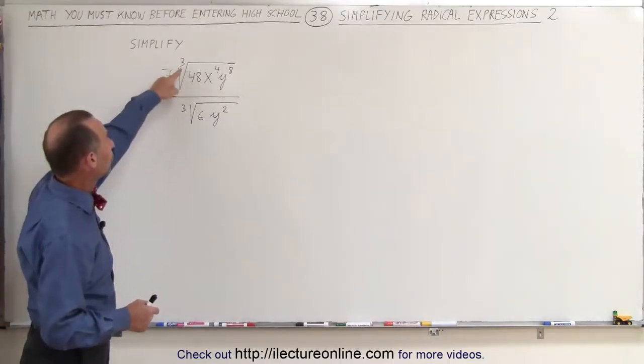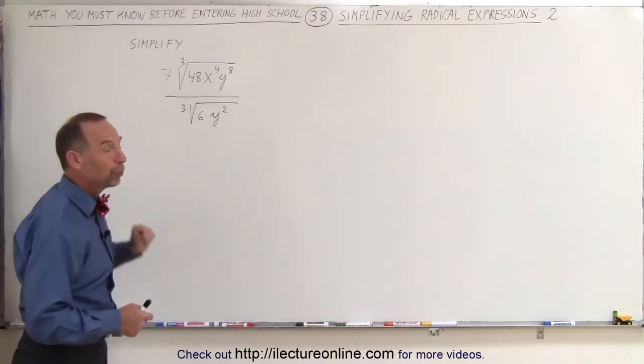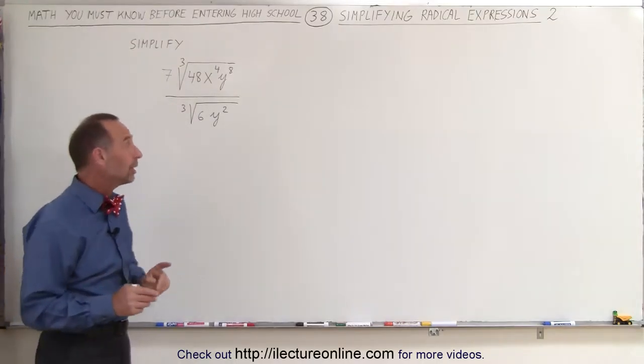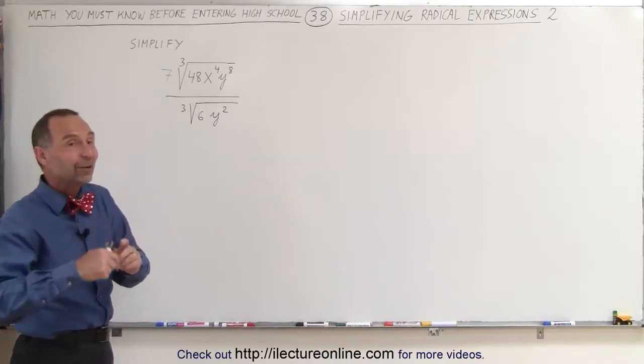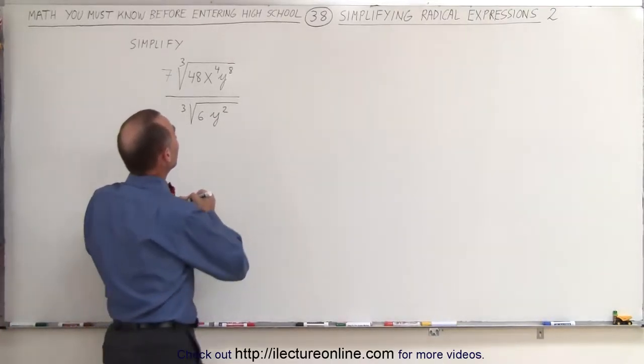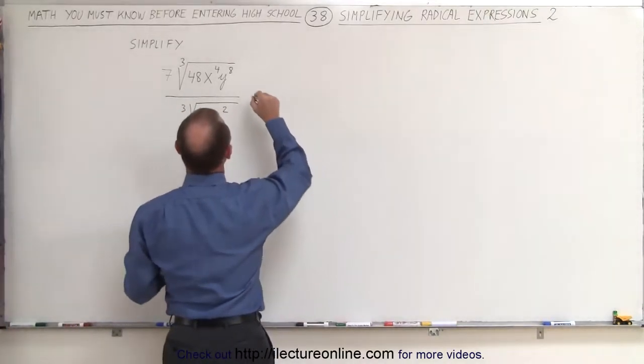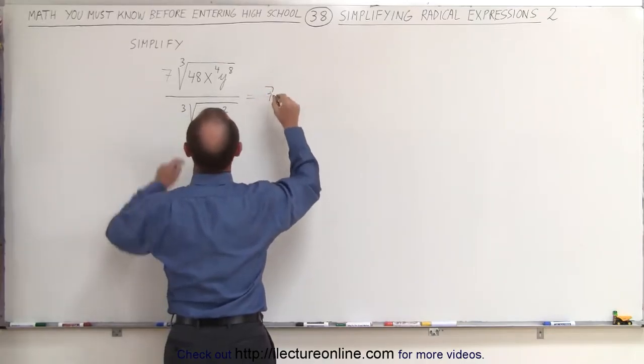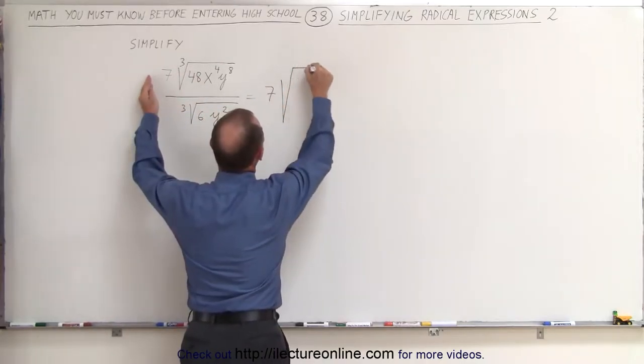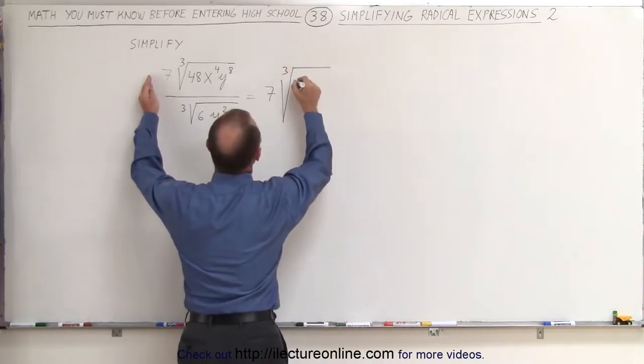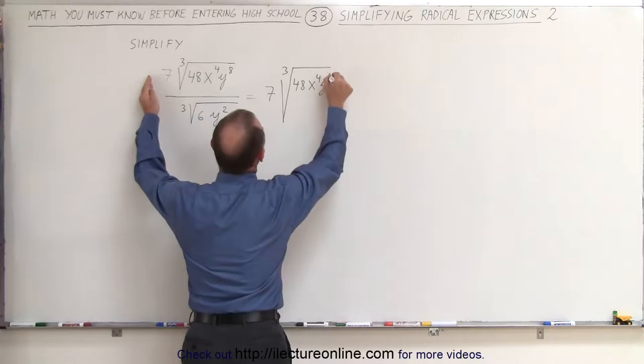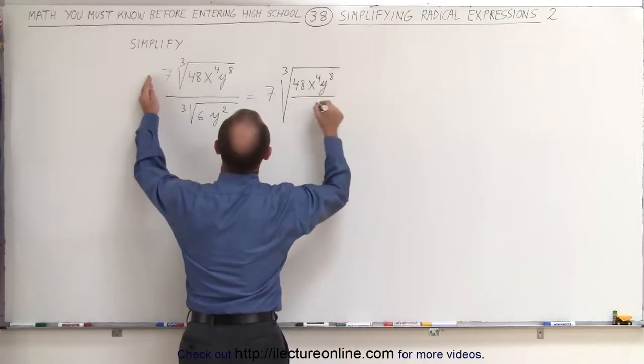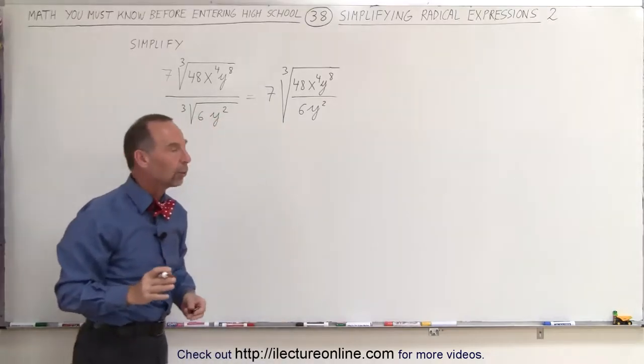But notice that it's the cube root in the numerator and the cube root in the denominator. So what we can do here is we can write it all under a single radical expression. This can then be written as follows: This is equal to 7 times the cube root of 48x⁴y⁸ divided by 6y². So we put it all under a single radical.